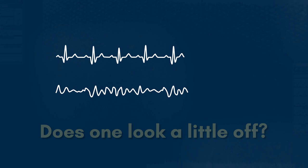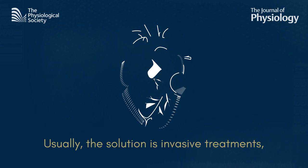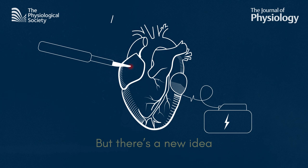Look at these heartbeats. Does one of them look a little off to you? This is a heart with ventricular fibrillation, which happens when the electrical signals that keep our heartbeat in time become disturbed, muddling the rhythm. Usually the solution is invasive treatments like implants or burning out troublesome parts of the heart. But there's a new idea that might make resetting the heartbeat as simple as switching on a light.